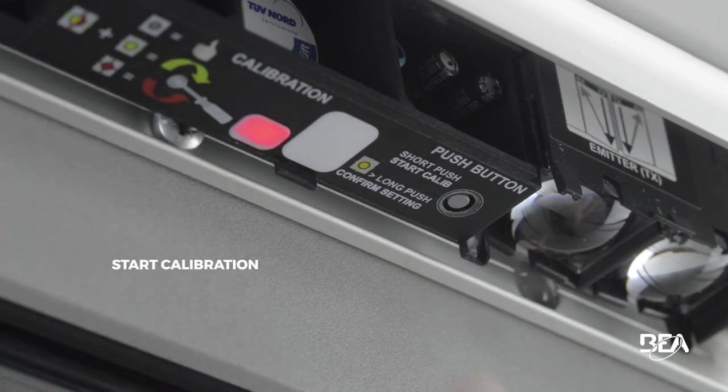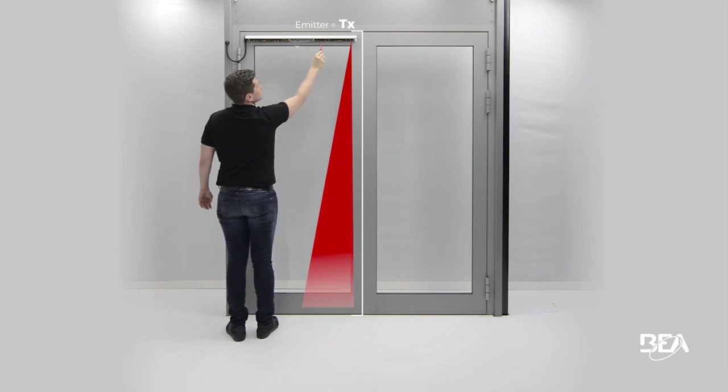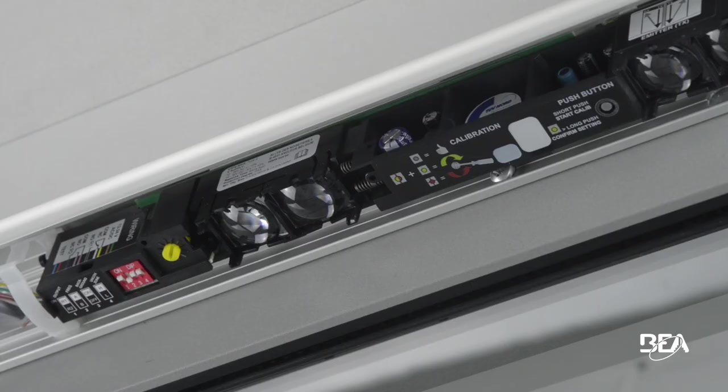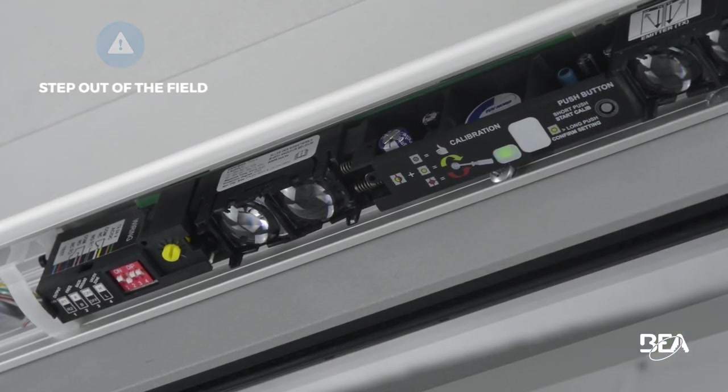Press shortly on the button to start a calibration. Make sure to stay out of the detection field during a calibration. If the sensor flashes red-green and then stops flashing, the module is calibrated correctly.